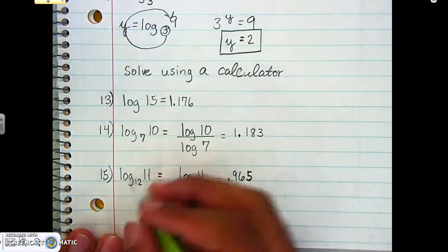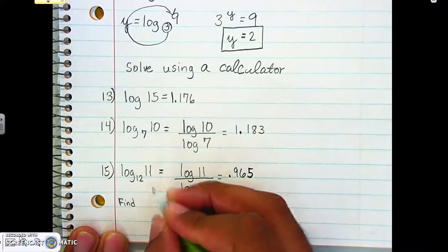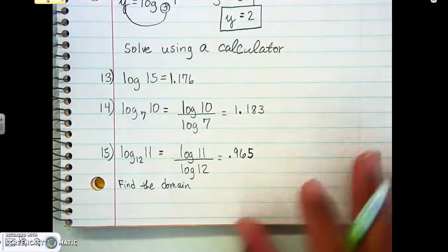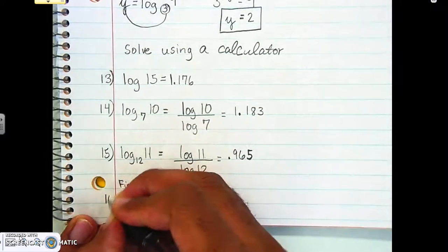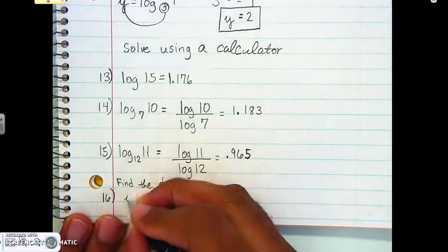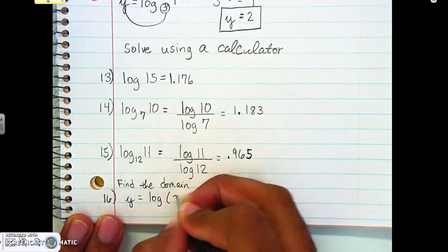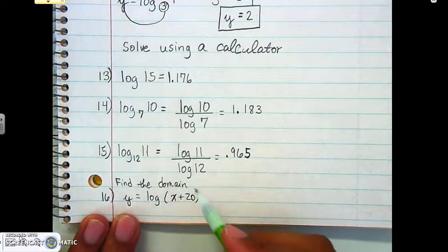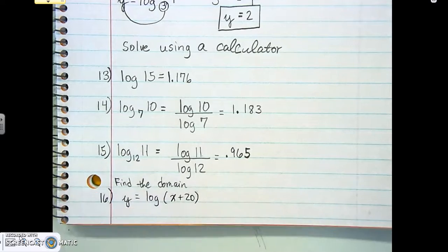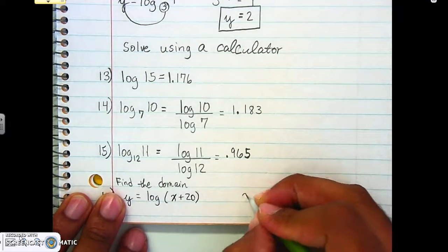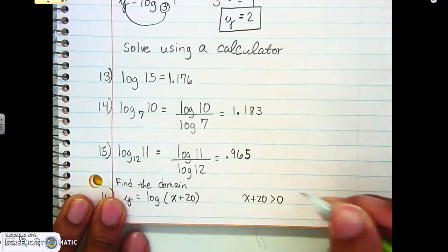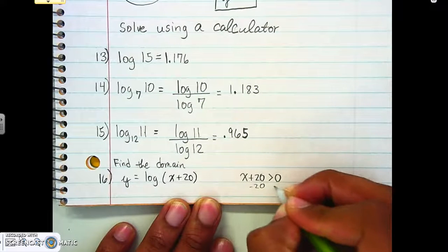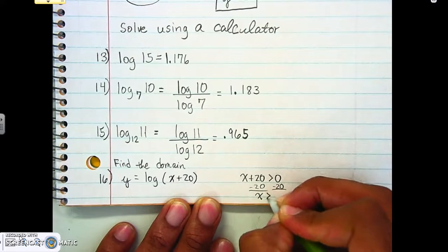All right, and then the last one, number 16, says find the domain. This one should be another easy one for you. It says y equals log of x plus 20. And finding our domain, we said anything in this spot here has to be greater than zero, so it cannot be a negative number, anything smaller than zero. So we're going to do x plus 20 is greater than zero, and we're going to solve this out. So we subtract 20 from both sides, and we get that x is greater than negative 20.